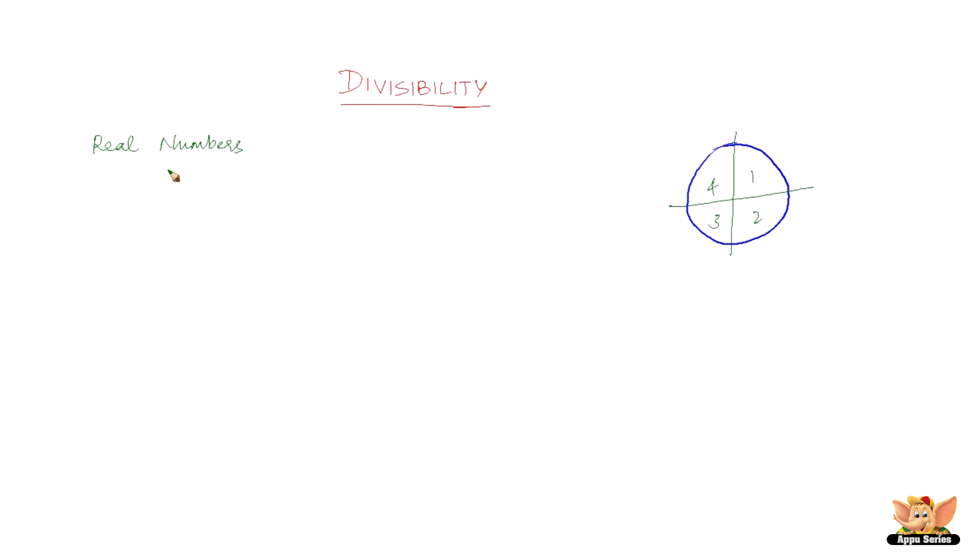What happens when you divide real numbers? That is what we're going to look into in this video. So let's take, for example, 3 divides 36. 3 divides 36 because there exists a number 12 such that 36 equals 12 times 3. So this is what division of real numbers is all about.